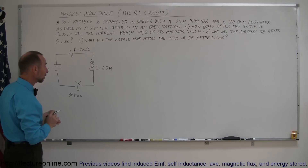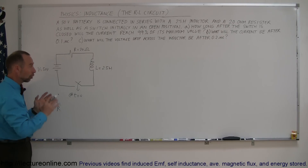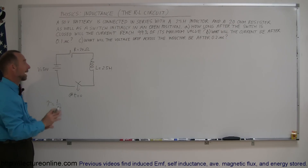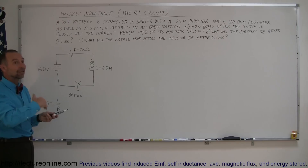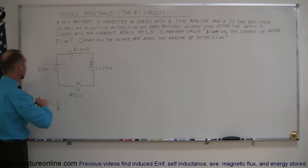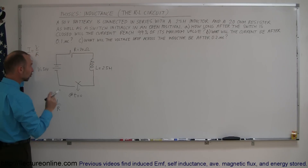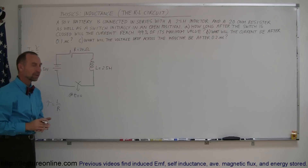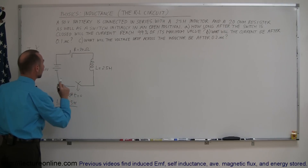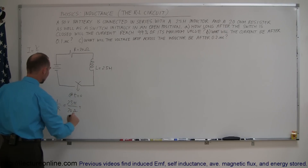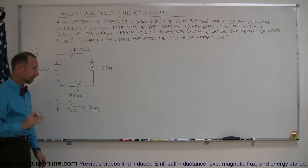There's a time constant associated with this. The time constant in this case is equal to L over R. The bigger the inductor, the longer the time constant, the more it will hold back the surging current. The larger the resistance, the smaller the time constant, because a larger resistor means the final current will be relatively small — remember Ohm's law, current equals V over R. So the time constant is L = 2.5 Henrys divided by R = 20 ohms, which equals 0.125 seconds, about an eighth of a second.